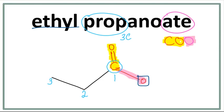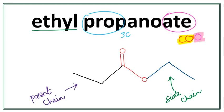We have ethyl, so let's draw ethyl with this oxygen right here. Since we are drawing a line structure, we don't really need to draw out this carbon here. So let's get rid of this carbon and the numbers. This is the structure for ethyl propanoate. The side chain always attaches with the oxygen in the functional group; the parent chain always attaches with the carbon in the functional group.